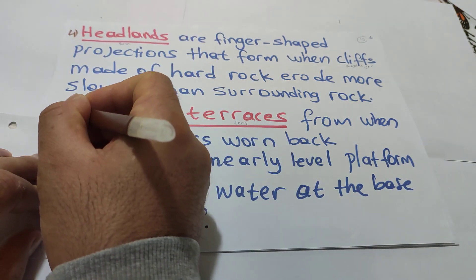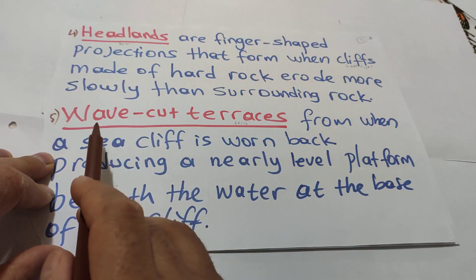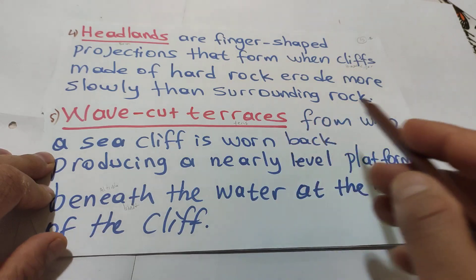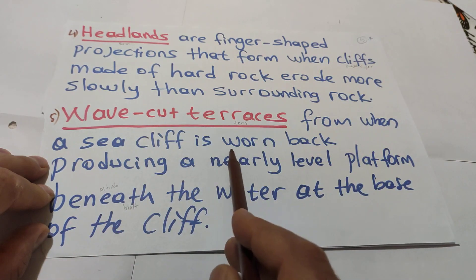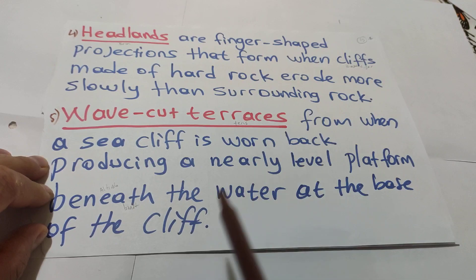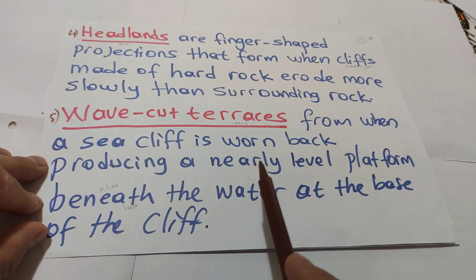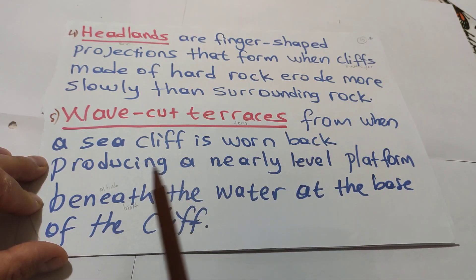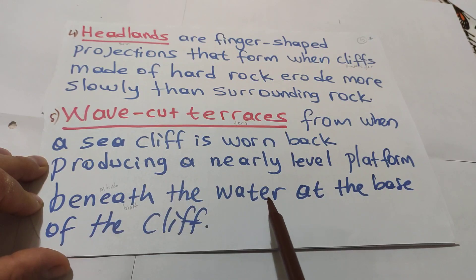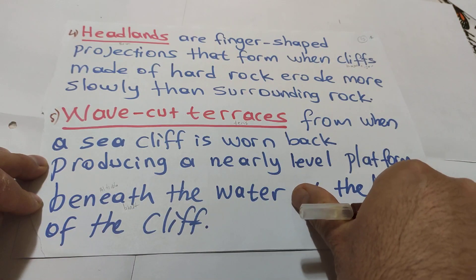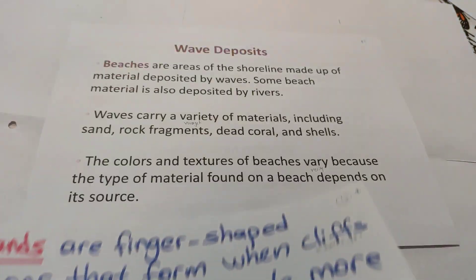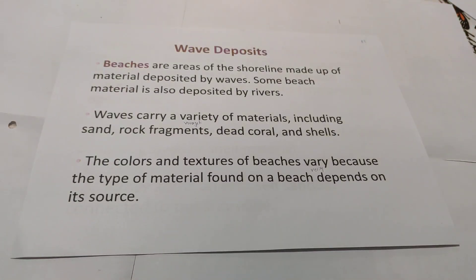The fifth kind is a wave-cut terrace, which forms when a sea cliff is worn back, producing a nearly level platform beneath the water at the base of the cliff. There are five kinds of sea cliffs. Students, we must know them and memorize their names and definitions.